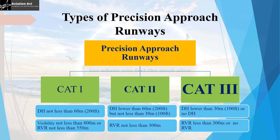When visibility deteriorates further, we use sophisticated equipment like the instrument landing system, which falls under precision approach runways. Precision approach runways are divided into three categories based on the precision of the equipment and visual aids used to accommodate a safe landing. A CAT-1 precision approach runway can bring an aircraft to a decision height of 60 meters, beyond which visual reference must be established to carry out a landing. CAT-1 runways are usable down to a visibility not less than 800 meters and an RVR not less than 550 meters.